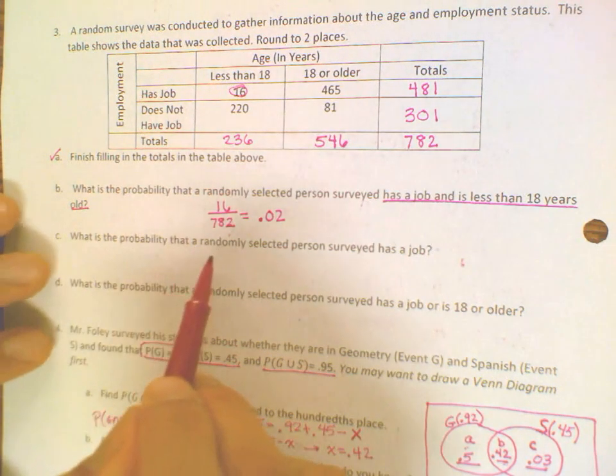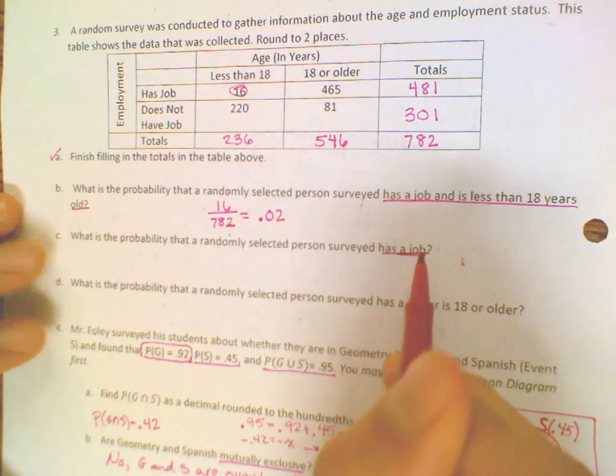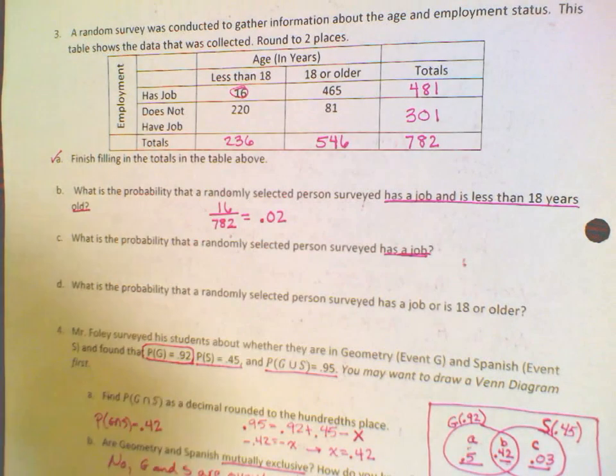So what is the probability that a randomly selected person surveyed has a job? Well, look for the row of people that have a job.